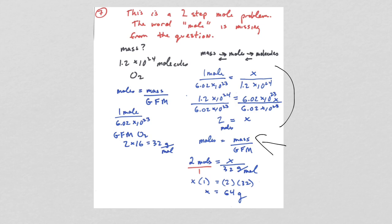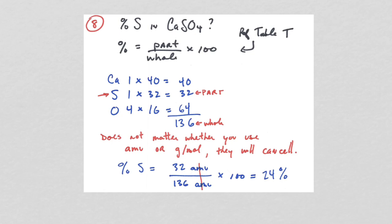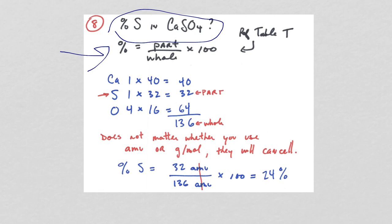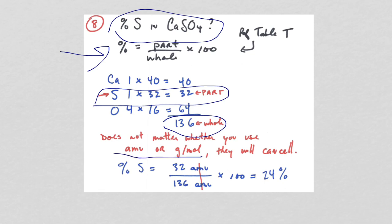For question 8 we're looking at percent of an element in a formula. The percent formula is on reference table T — percent = part ÷ whole. Calculate the gram formula mass as your whole (the denominator). Here we're looking for sulfur as the part. The units cancel whether you use amu or g/mol. Dividing 32 by 136 and multiplying by 100 gives 24%.